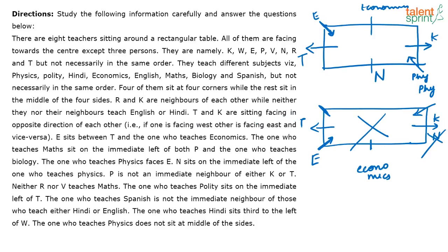Now: T and K are sitting facing opposite directions, E sits between T and the one who teaches economics, the one who teaches max sits on the immediate left of P and the one who teaches biology, and the one who teaches physics faces E. It is given that the one who teaches polity sits on the immediate left of T — so this position has to be polity. That is fixed now.